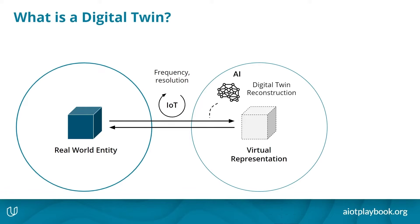The first part where AI can be used is in what we call the reconstruction of the digital twin, meaning the creation of the virtual representation from the real-world data. This can be straightforward, but as we'll see later, this can also be quite complex, in which case AI can be a suitable tool.